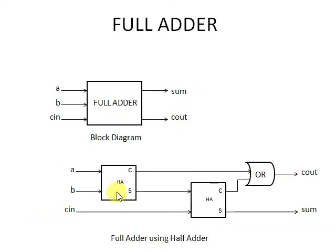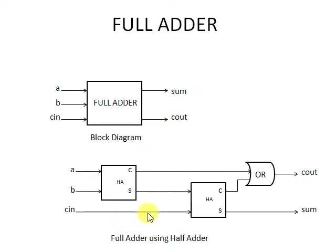A and B are input to the first half adder, producing a carry and a sum. The carry of the first half adder will be input to the OR gate, and the sum of the first half adder will be input to the second half adder.